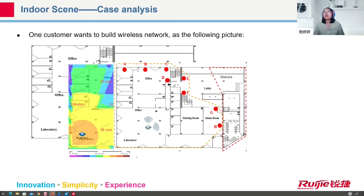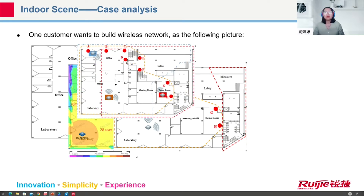In the next step, we can find the edge points where the signal may be very poor. We can then add more APs one by one and test again. For example, in this case, each room has the highest user count. We suggest deploying three APs here at this location. After adding the three APs and finishing the site survey, we may also use optimization to improve the user experience and make the network better.